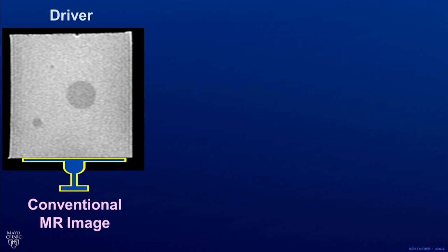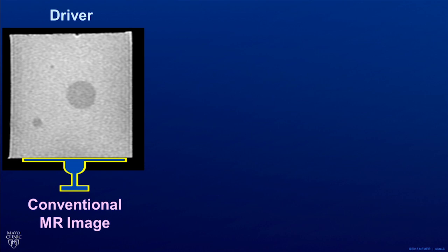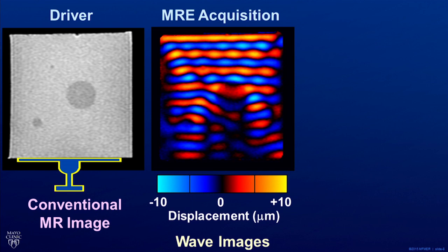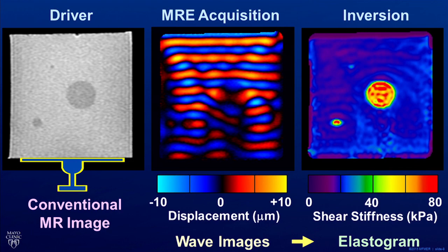This is a gel with stiff inclusions to show how MRI elastography works. It is a three-step process. First, we induce shear waves into the body with a vibration source we call a driver. For the head, it is a soft pillow-like device that results in vibrations similar to an electric toothbrush. In over 250 patients, we have never had a subject complain of discomfort. Second, we perform a phase-contrast MRI sequence that images the waves within the brain. Finally, complex mathematical inversions translate the wave information into maps of stiffness that we call elastograms.